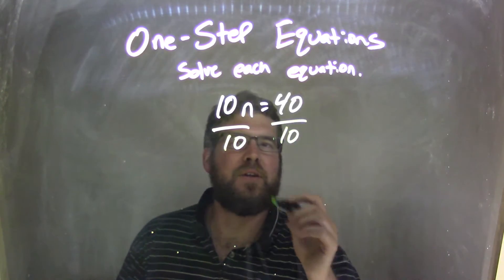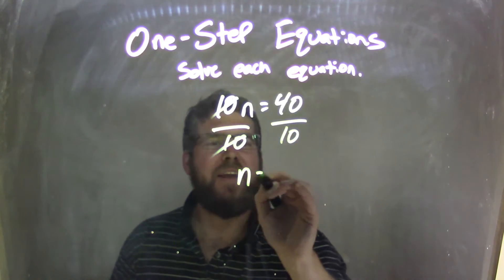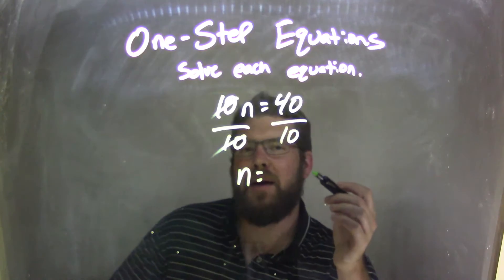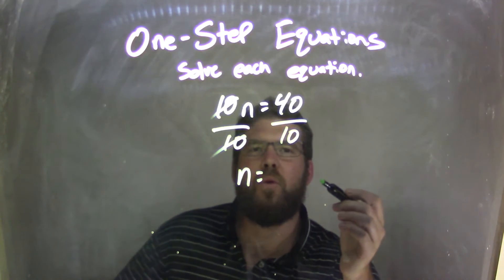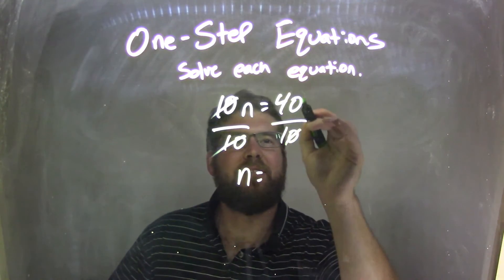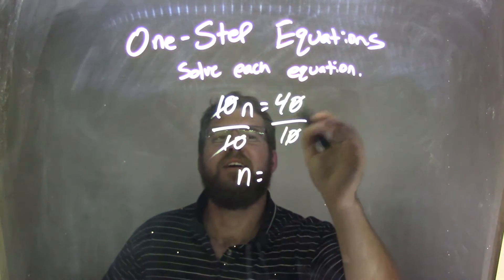Hopefully you can see, the 10s cancel, leaving n. And now, 40 divided by 10. Well, that's pretty simple. The zeros, we can write off here, you know, that little technique. Get rid of the zeros.